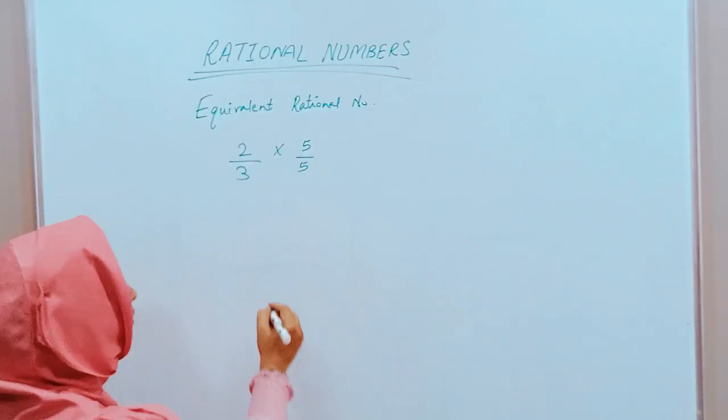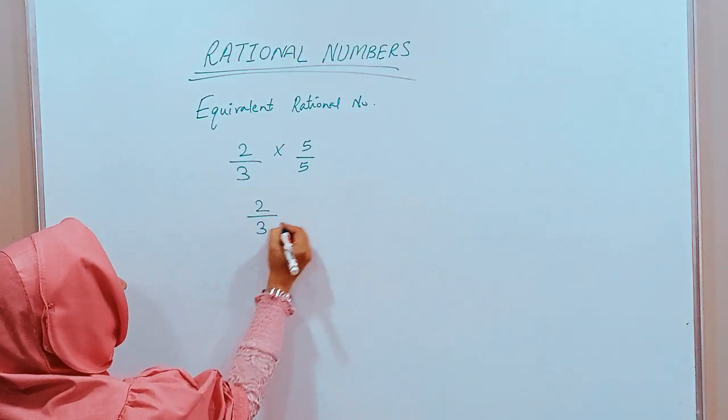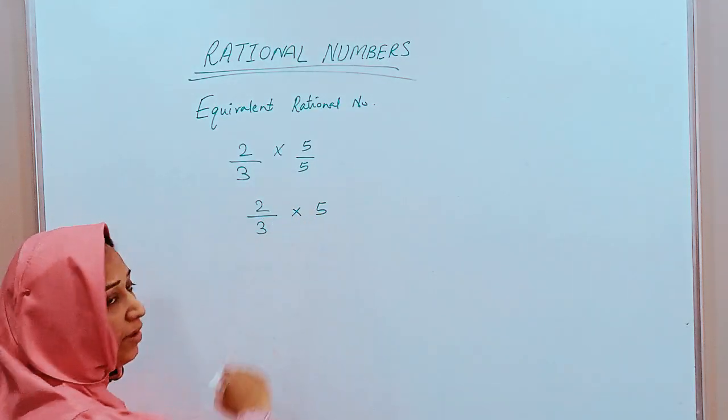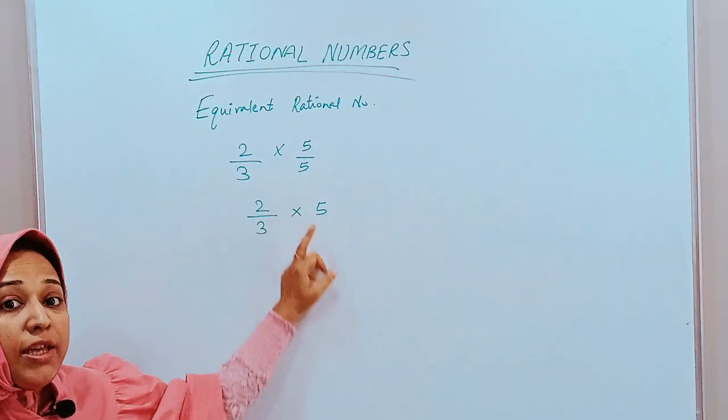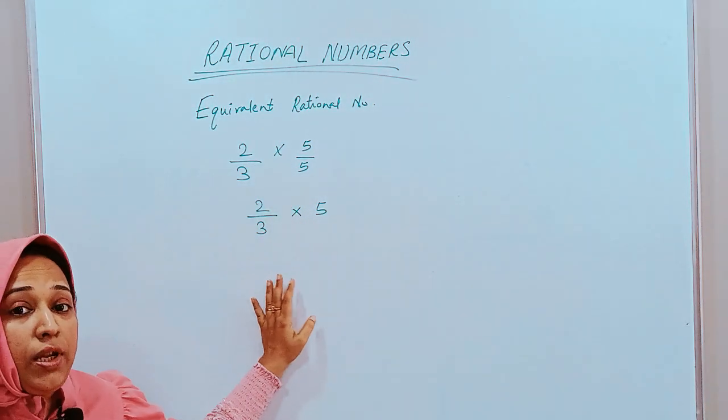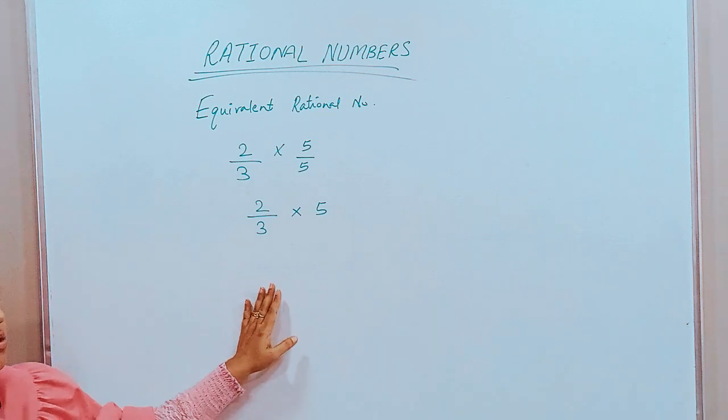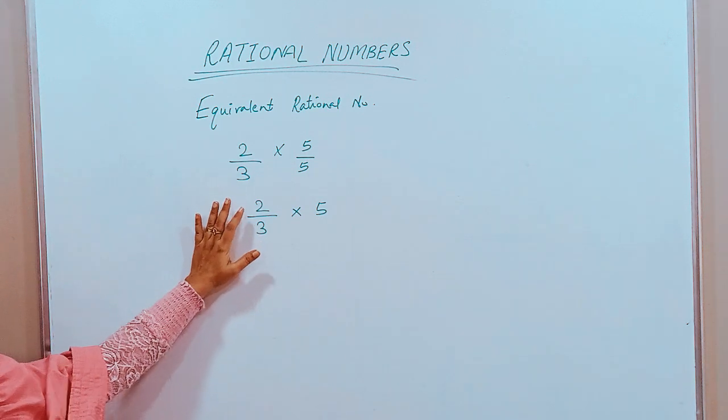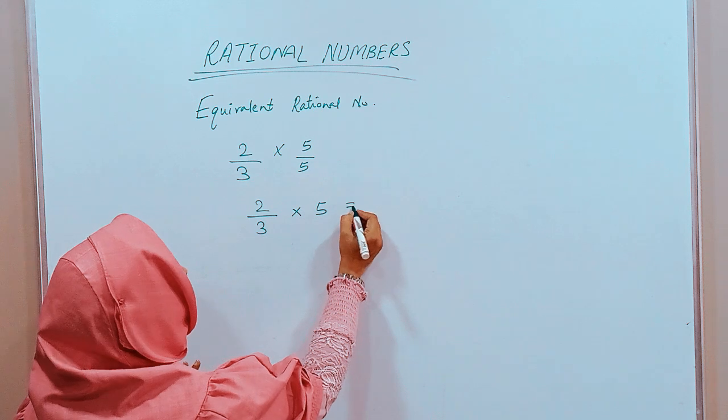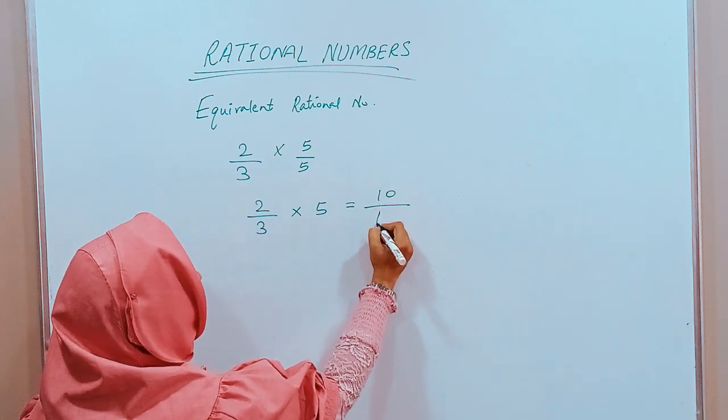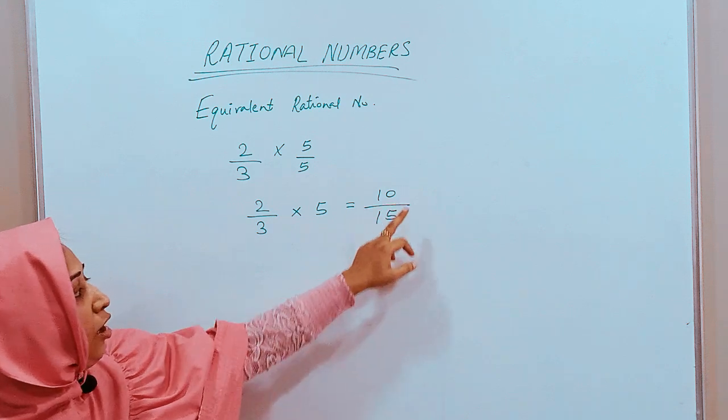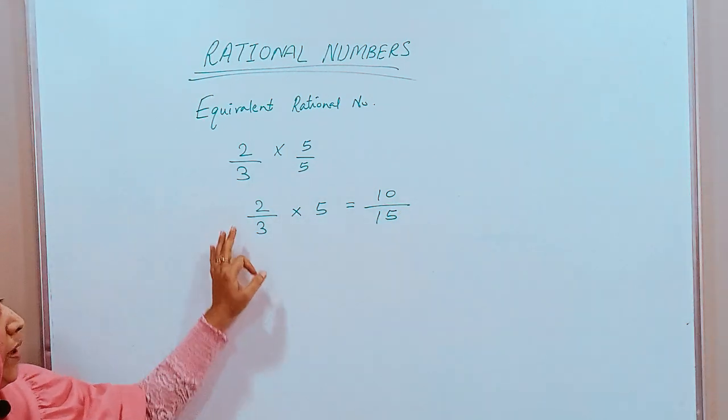We can write this way, or you can write simply 2 by 3 into 5. Multiplying 5 with numerator as well as denominator is very important because the main number should not change. It means its value should not change. 2 by 5 is 10, 3 by 5 is 15. 10 upon 15 is equivalent to 2 upon 3.